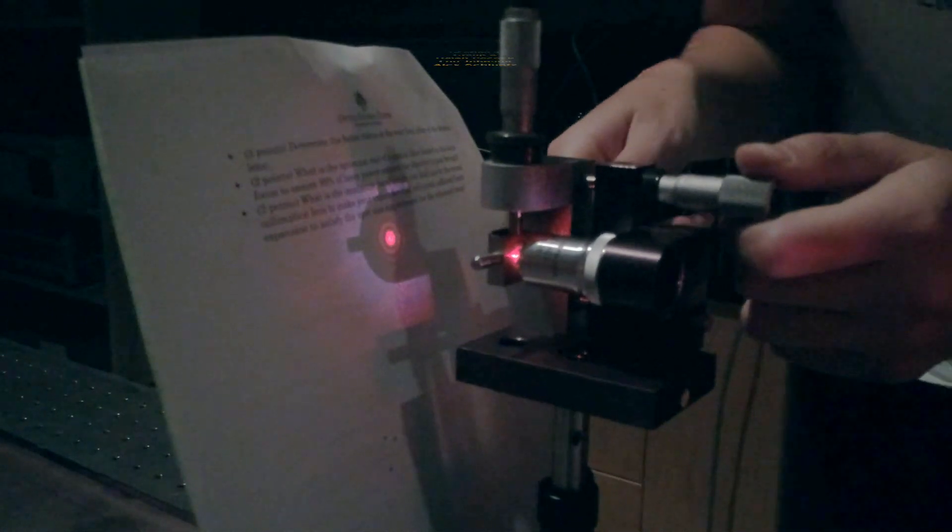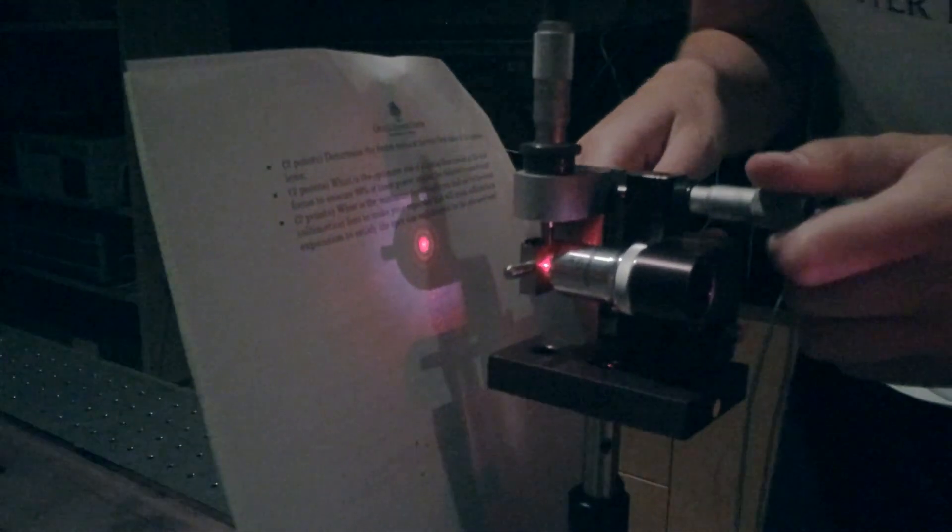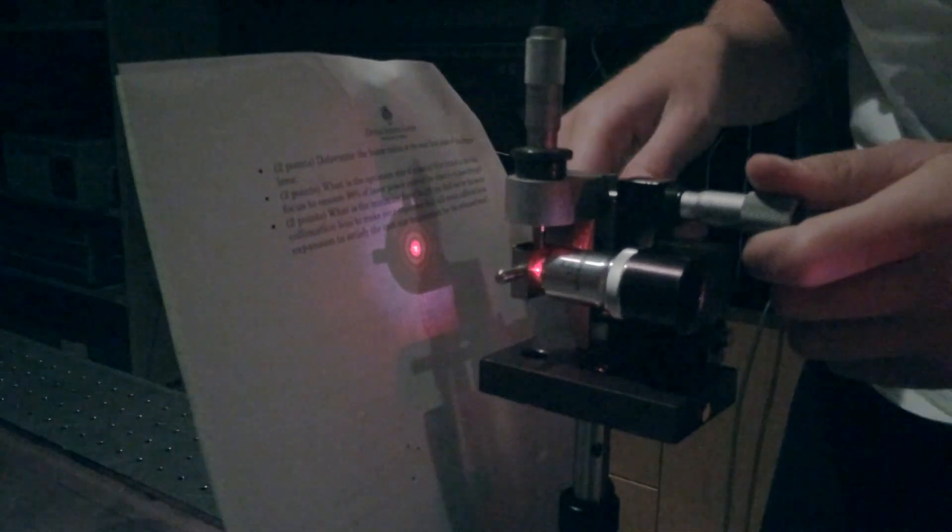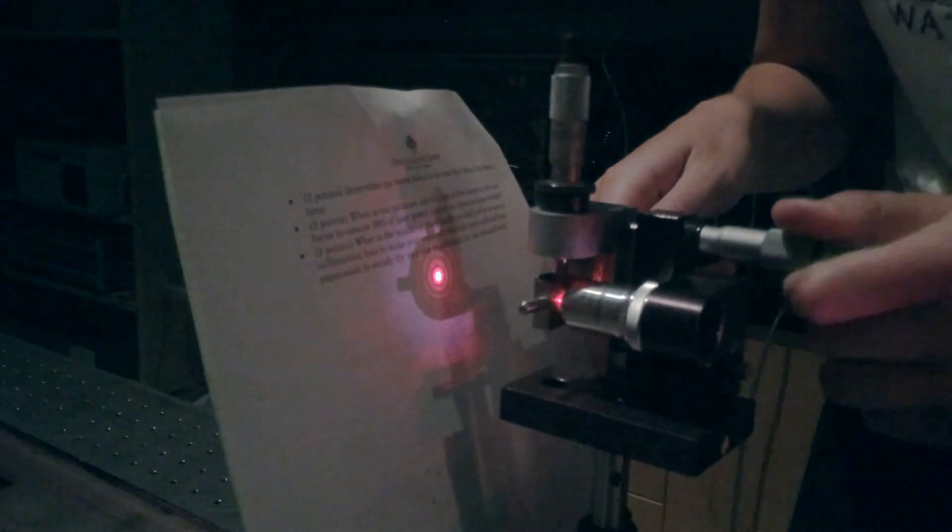So for this lab, since we're trying to achieve a specific beam expansion ratio, it's more difficult to align this objective because we're using a higher numerical aperture in order to use a smaller focal length, and so the working distance is very small, and it's more difficult to align this spatial filter.